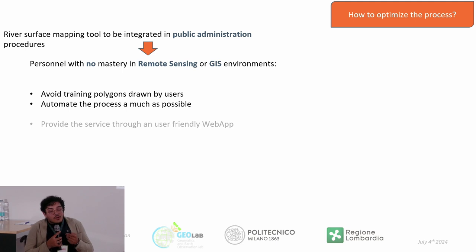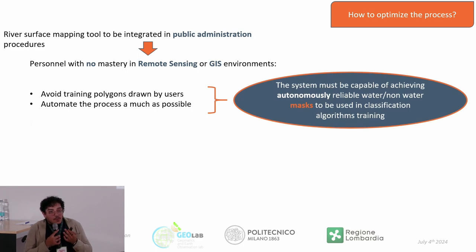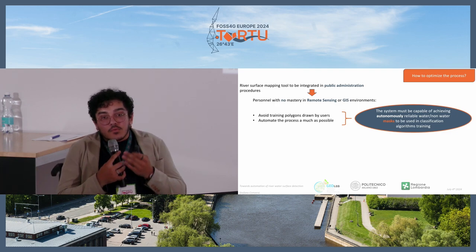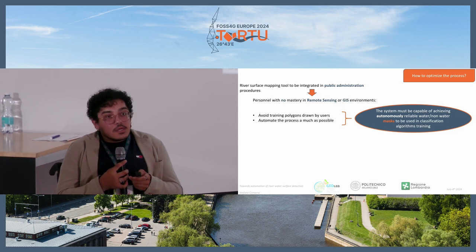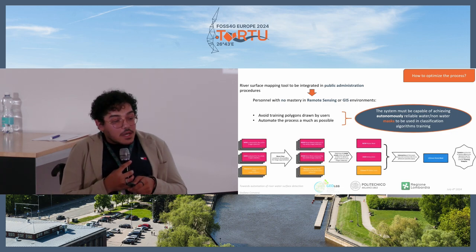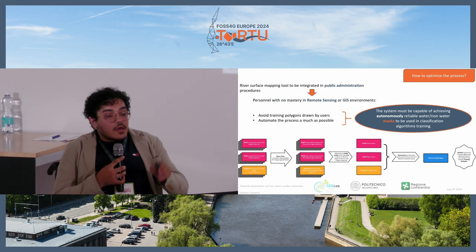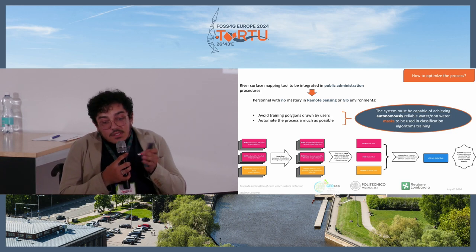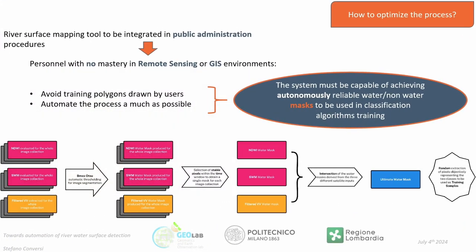The main idea is to create a real web app that is user-friendly and can be easily integrated into public administration procedures. We decided to create a system capable of autonomously producing a map containing only water or non-water pixels — a reliable water mask — from which we can randomly extract training samples. We consider three satellite inputs: NDWI, SWM, and a SAR image collection. For each input, we obtain a single water mask, then combine them to produce the ultimate, most reliable mask.